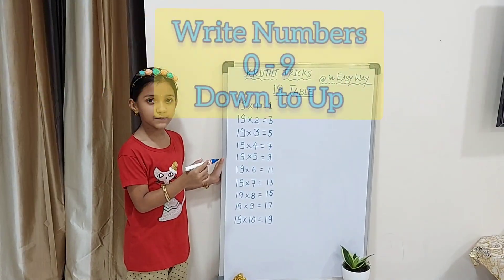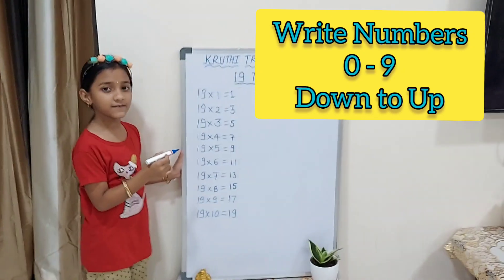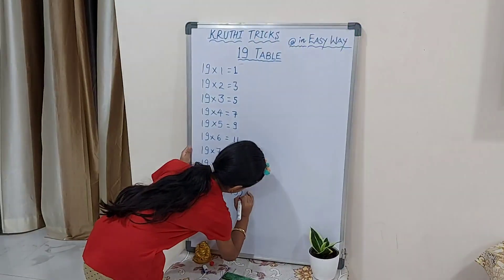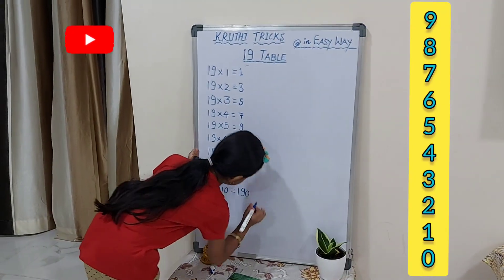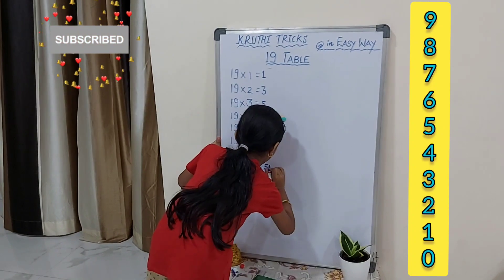Now we will write numbers 0 to reverse. 0, 2...